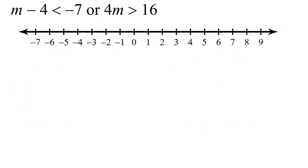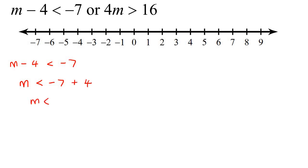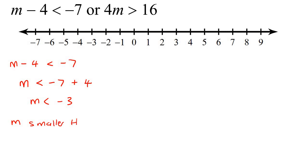Here is the next one. We'll just go solve the first one. We need to get M by itself, so we can take this minus four over to the other side, and we end up with minus seven plus four, so M is smaller than minus three. By now you should be quite comfortable — it means that M is smaller than minus three. So what we do is go to the minus three with the open circle, because it doesn't have the little line underneath, and then smaller than means to the left, so we draw a line like that.